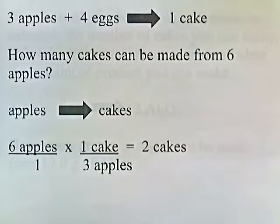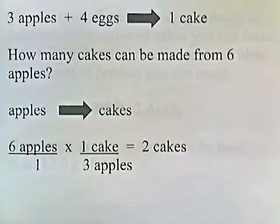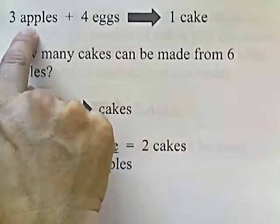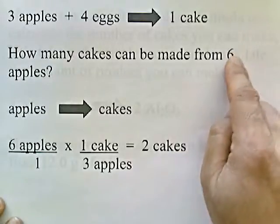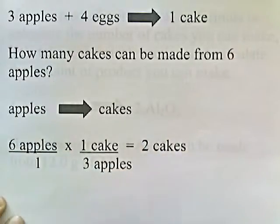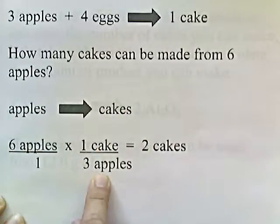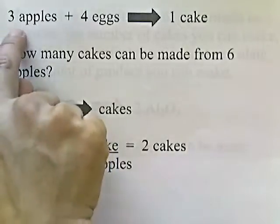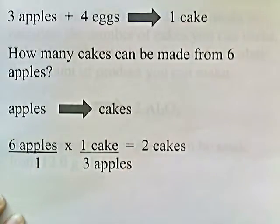How many cakes can be made from six apples? I'm going to show you how to factor-label this. We need to convert six apples into cakes. Looking at the equation, three apples will make one cake. Take the six apples and put it over one. I have apples on top and want to get rid of it, so I put three apples on the bottom and one cake on top, because three apples yields one cake. Apples cancel, and six divided by three gives me two cakes.